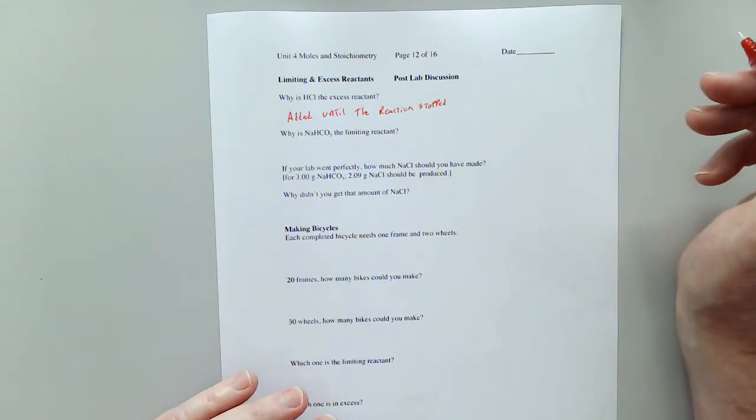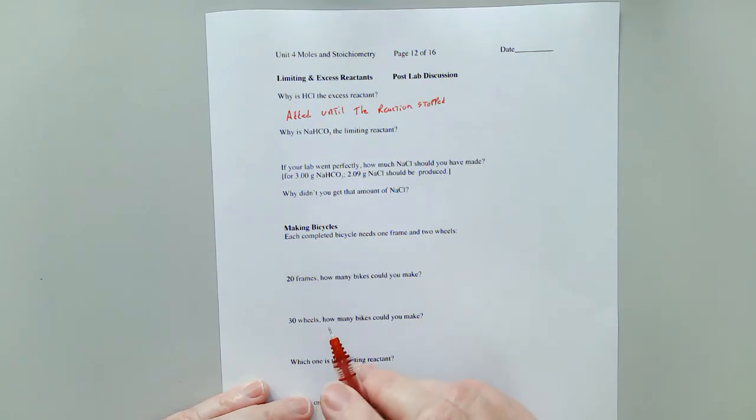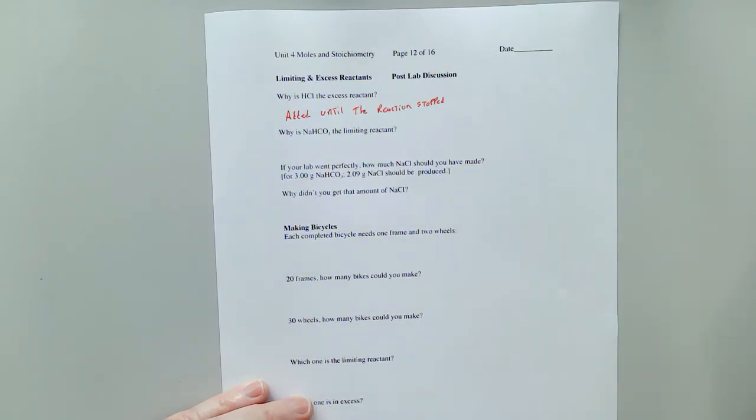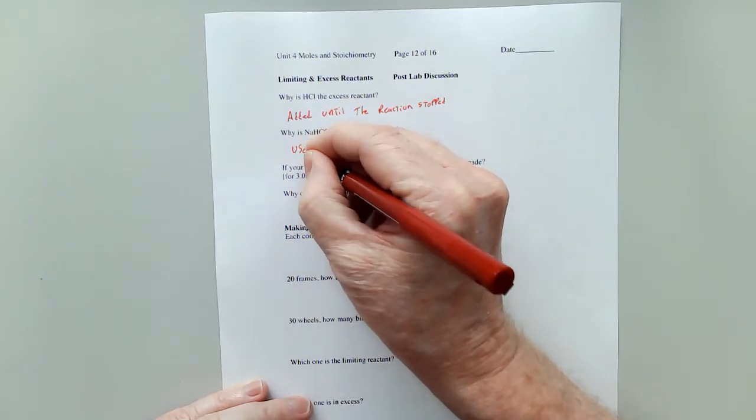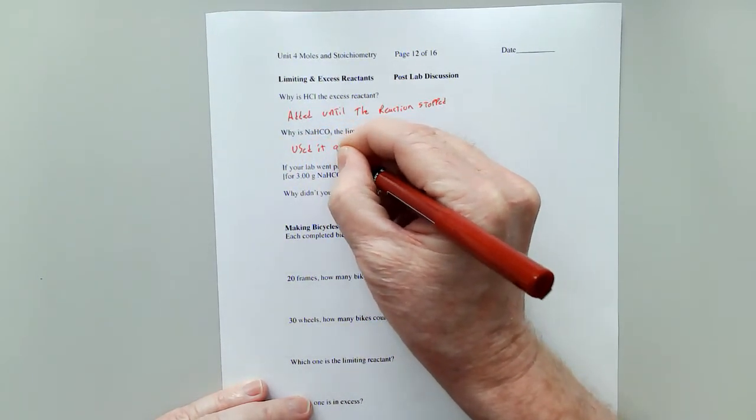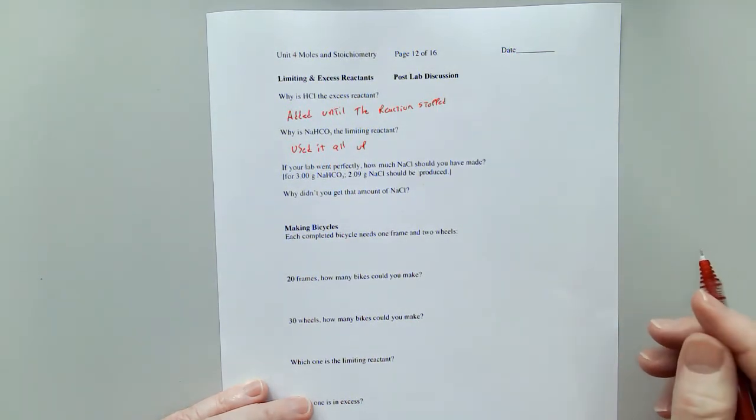So why is the sodium hydrogen carbonate or the baking soda the limiting reactant? Well, you could say it in kind of a sarcastic way by saying because HCl is the excess, or you could say because you used it all up, it quit bubbling.